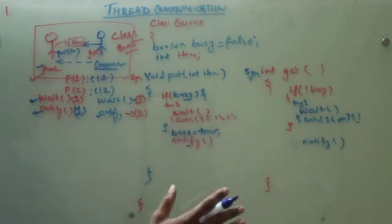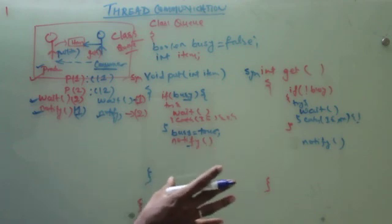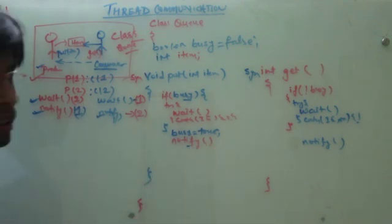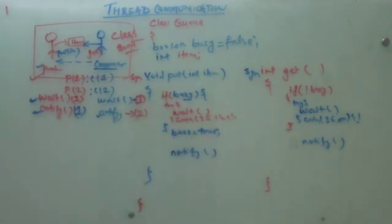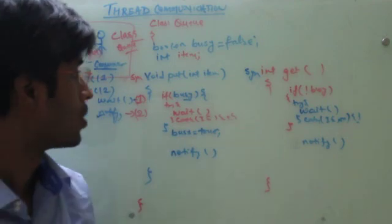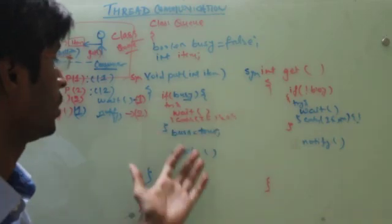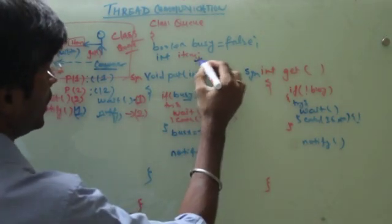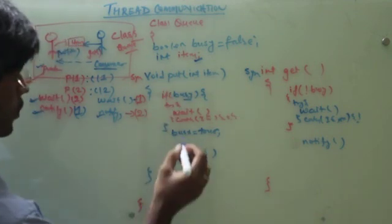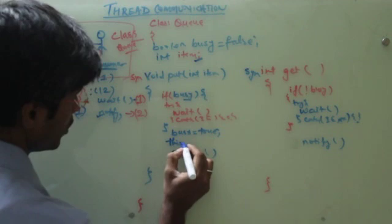This is overall architecture of the producer consumer problem. Now we will put the algorithm to apply the items like putting an item and getting item. This is all about the thread communication. When producer is putting we have to say this dot item is equal to item.